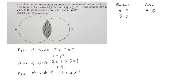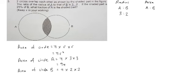So now the area I know is 9π to 4π, so I can also write it as 9 is to 4.